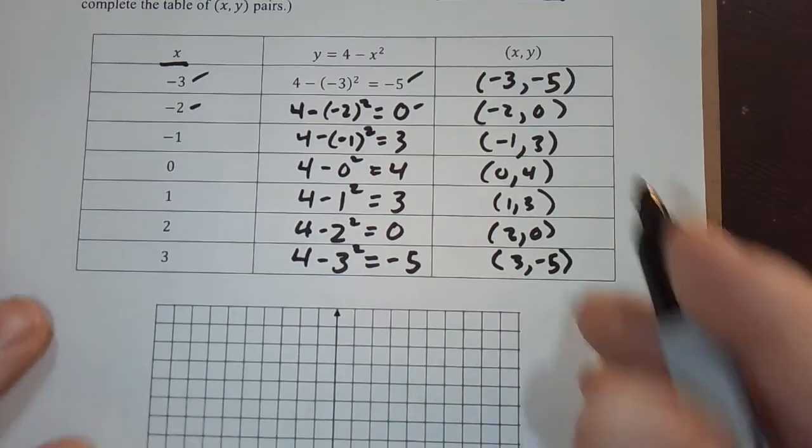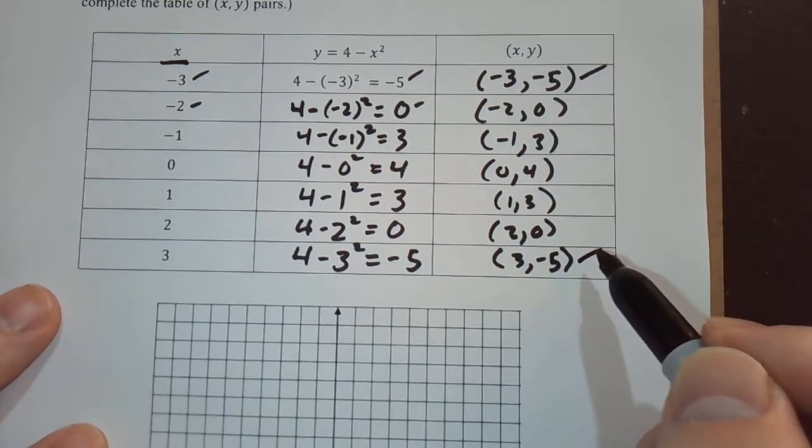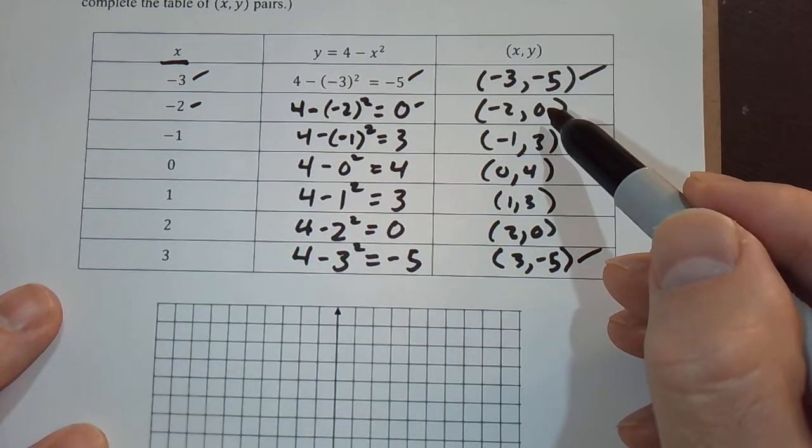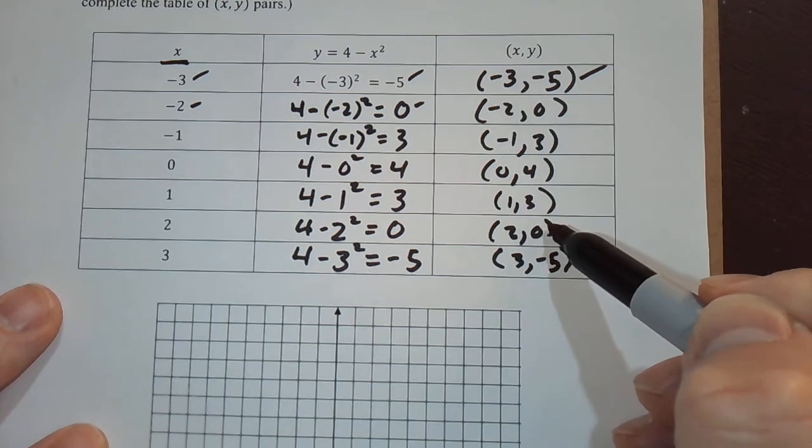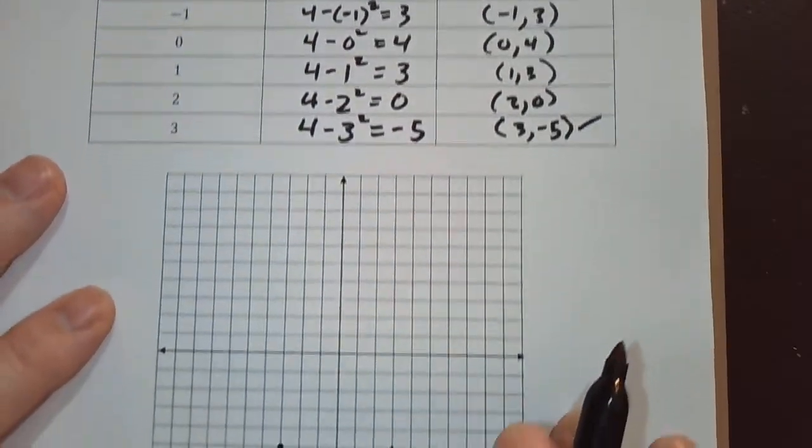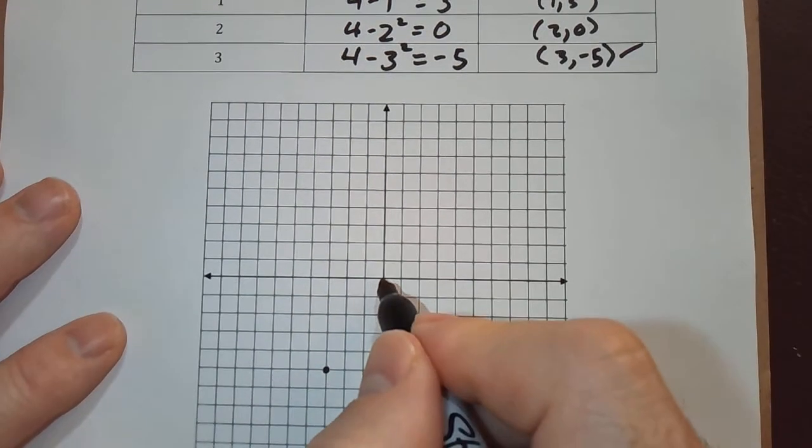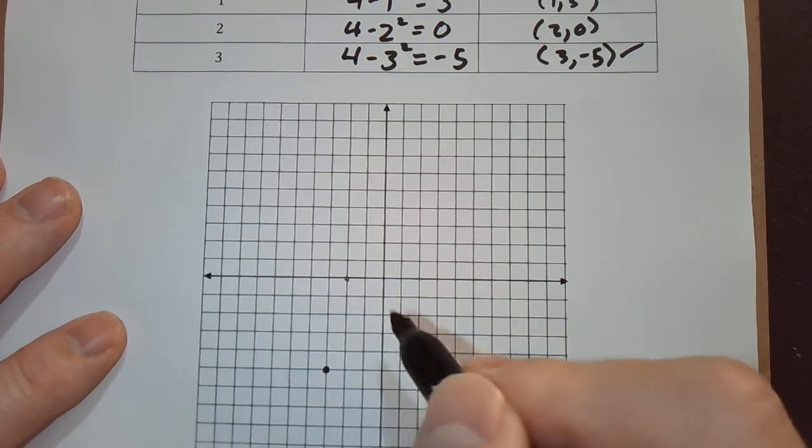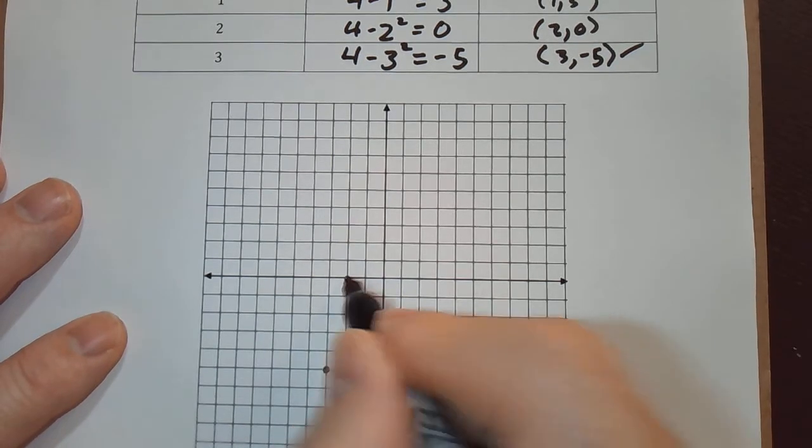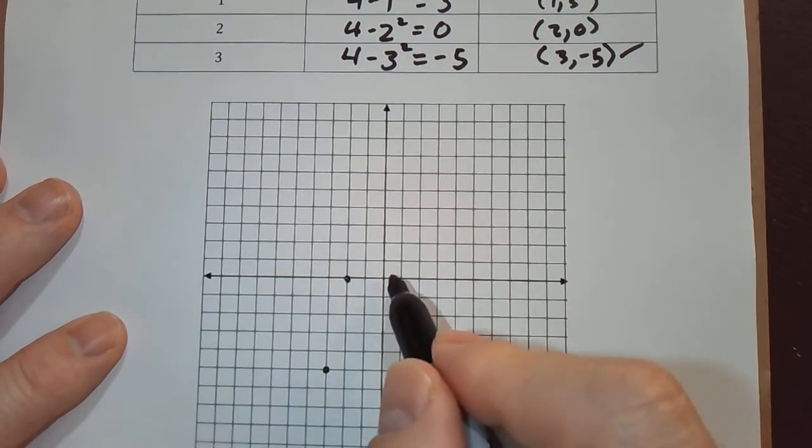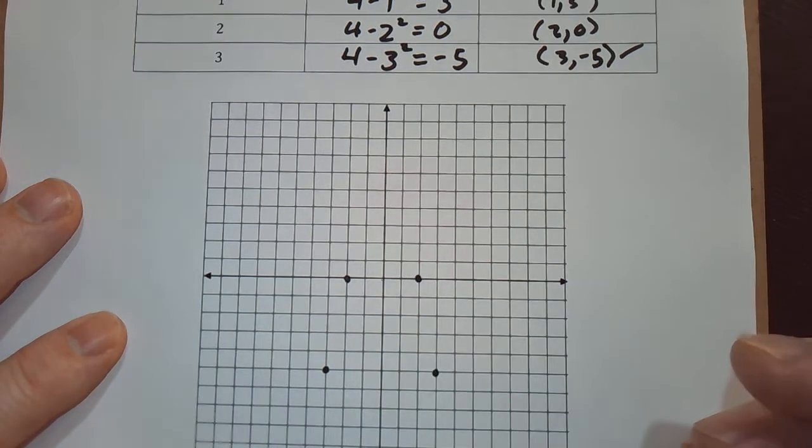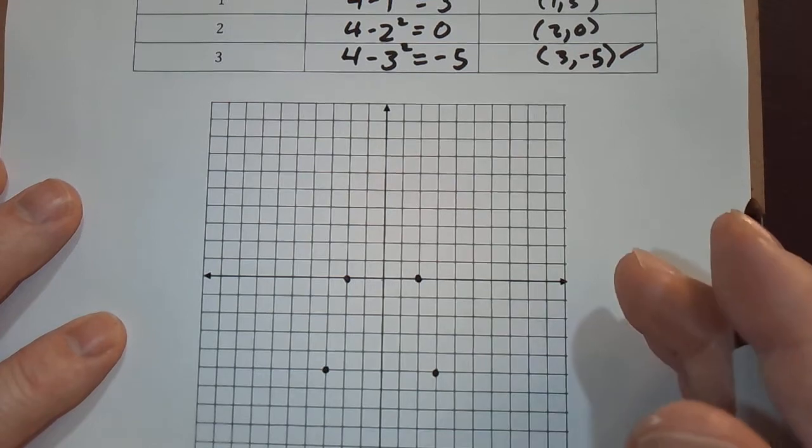And now the next two, we've done this one and we've done this one. Now I'm going to do negative 2, 0 and 2, 0. Negative 2, 0 means go left 2 and go up 0. So that's on the x-axis. And then that's negative 2, 0. 2, 0 would put us right there.